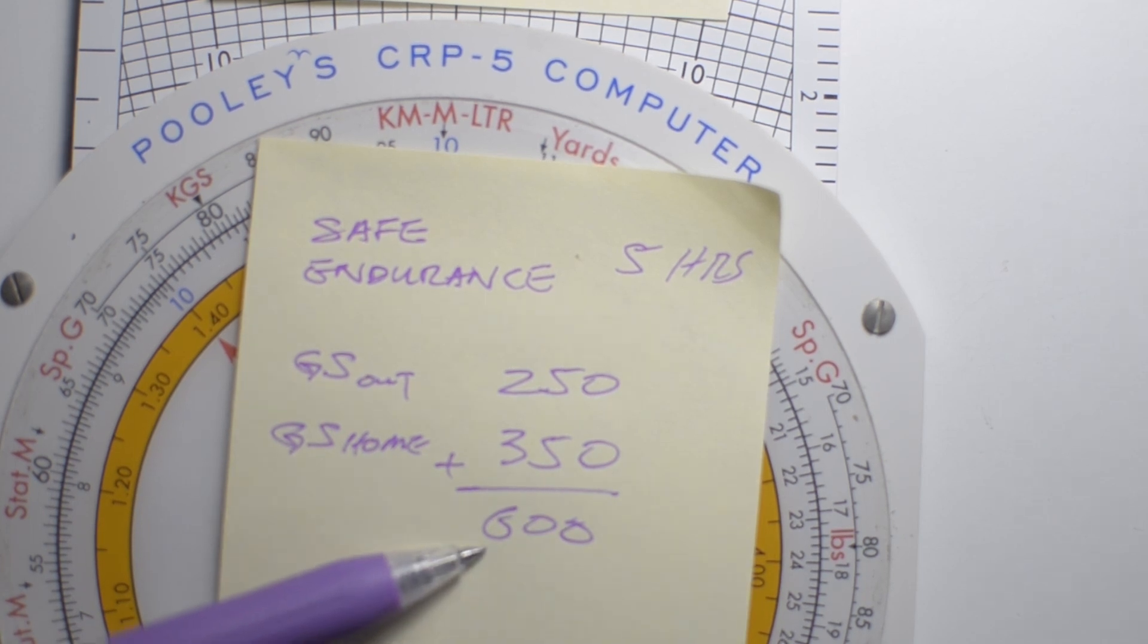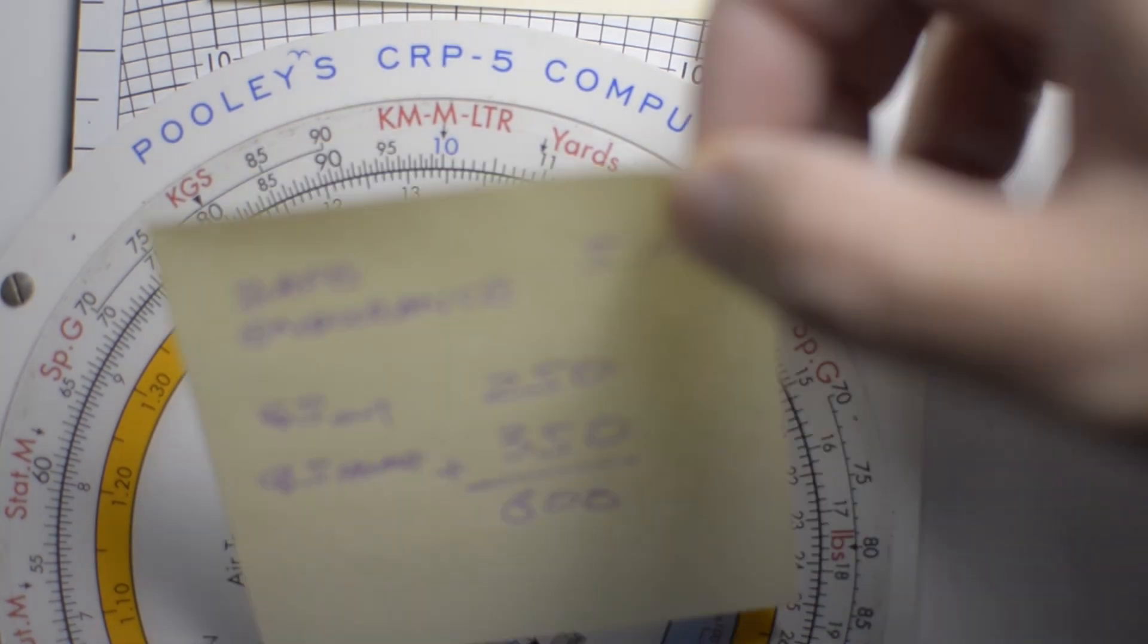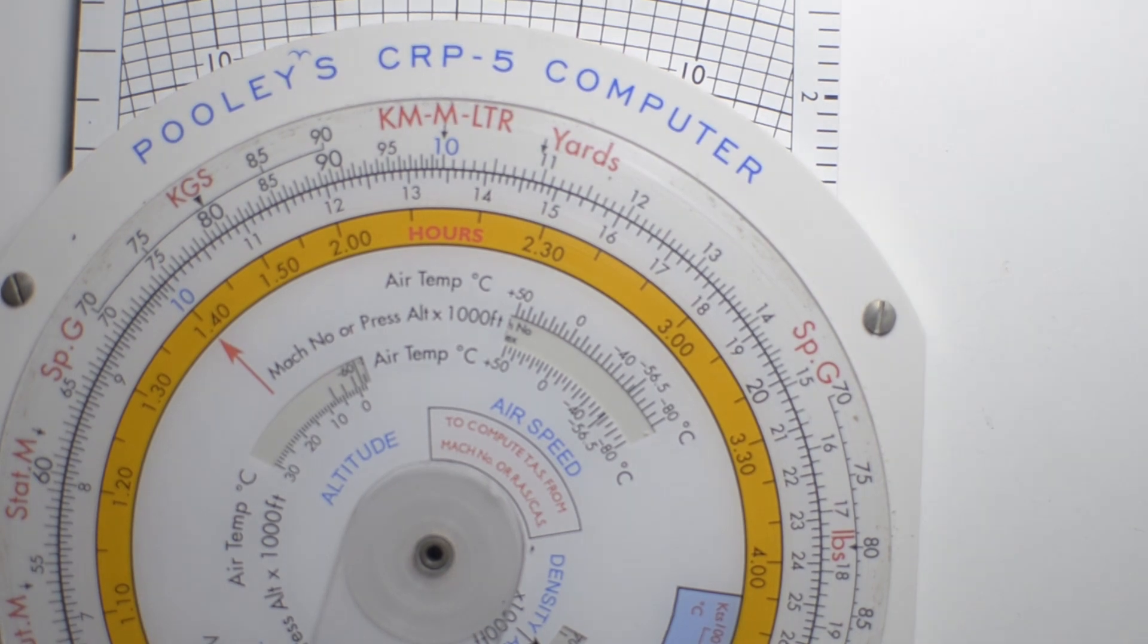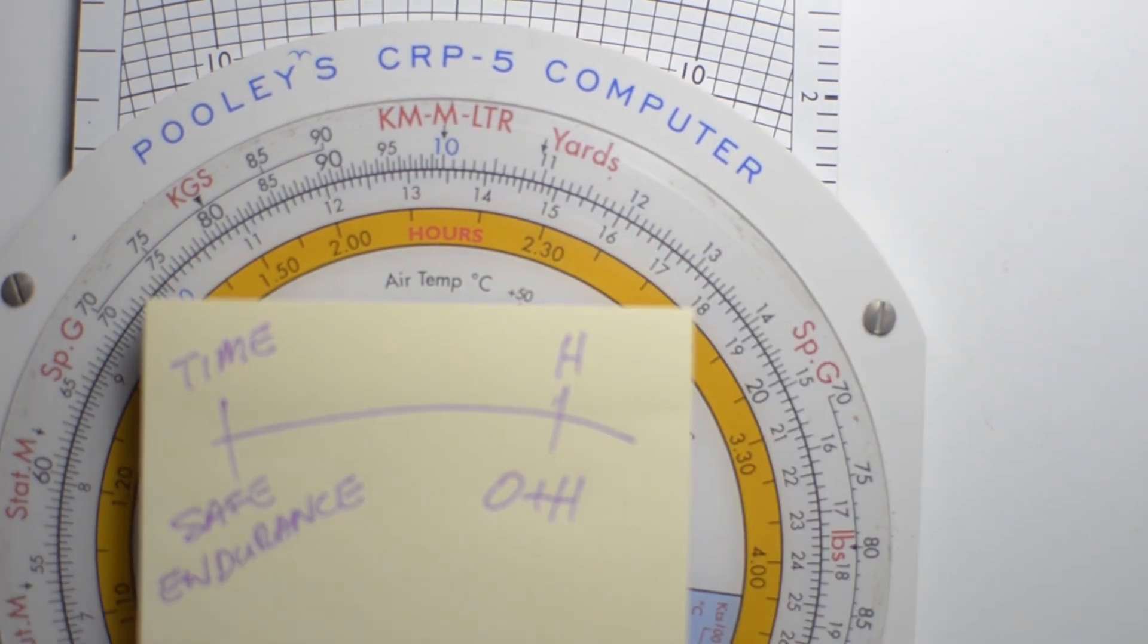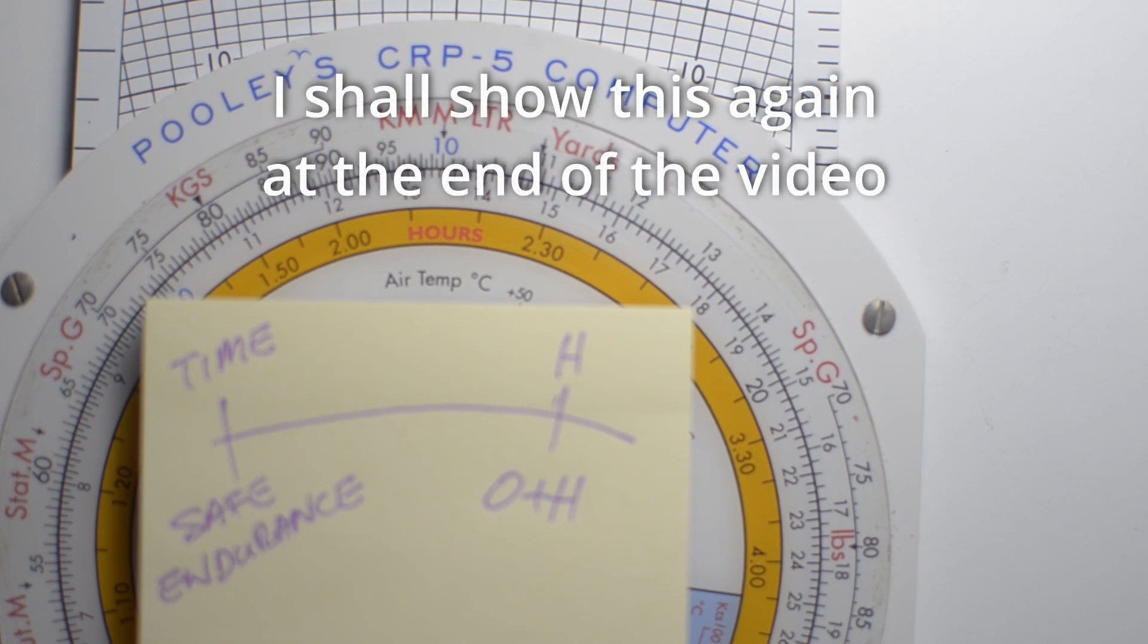because even though we are not using a formula to derive this calculation, we do have a pictorial kind of format in order to use the CRP5 to determine point of no return, or point of safe return, depends on your glass is half empty or half full kind of argument.